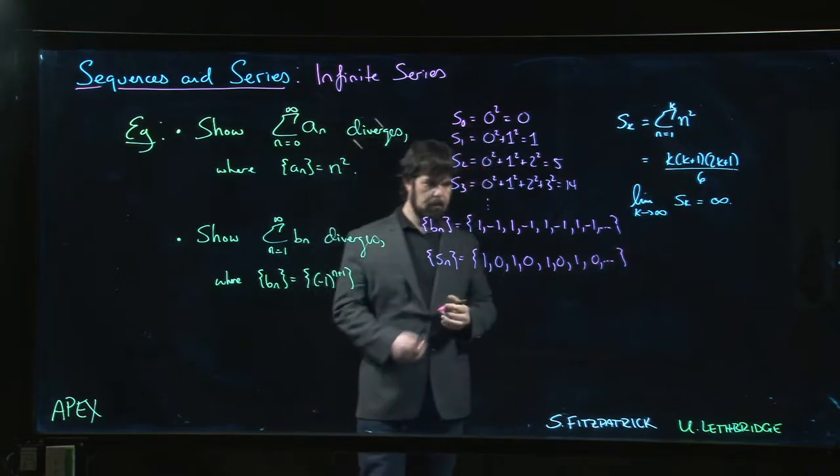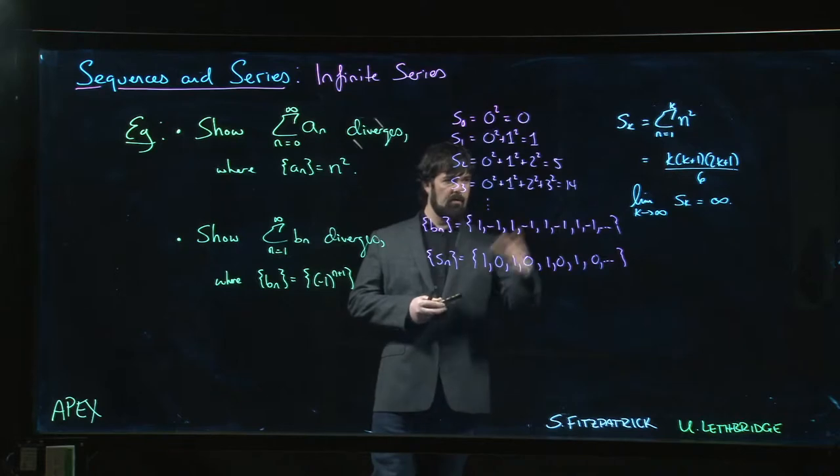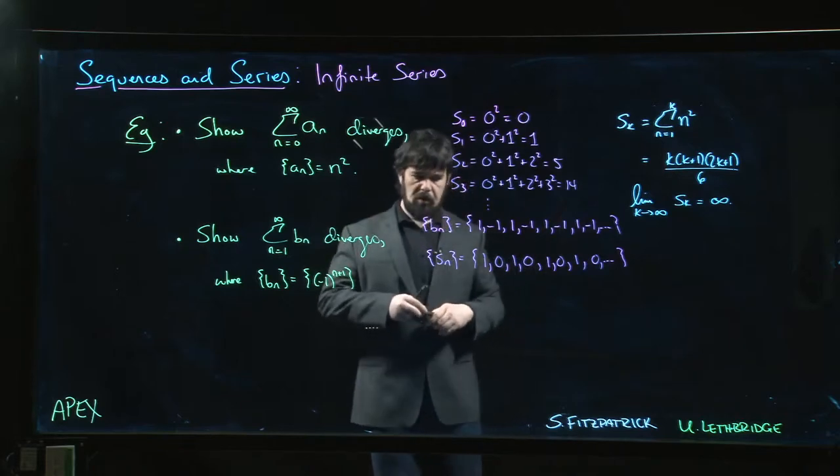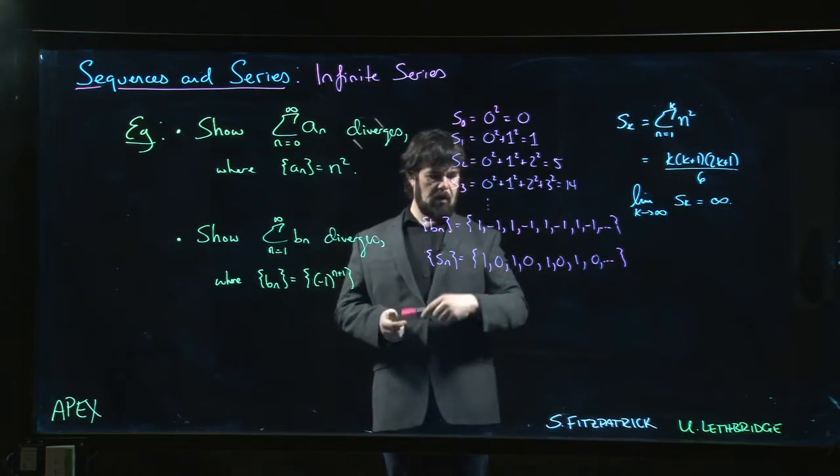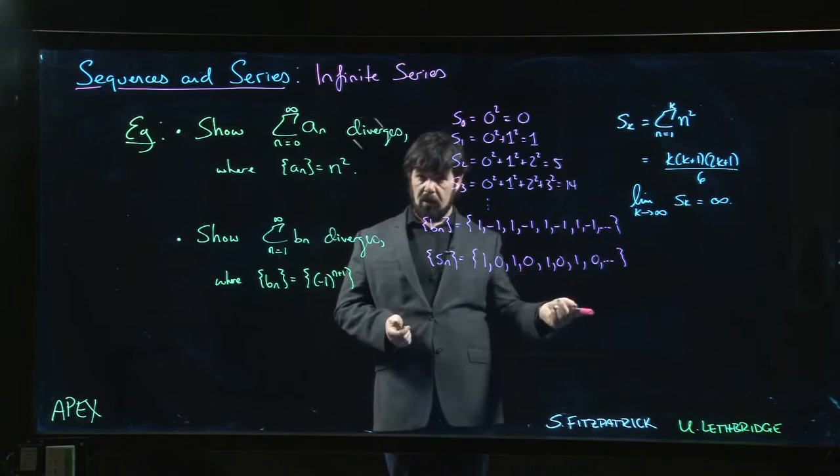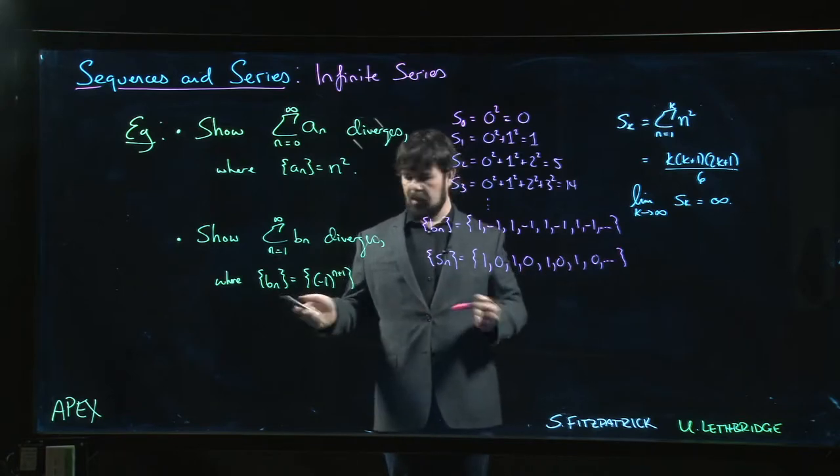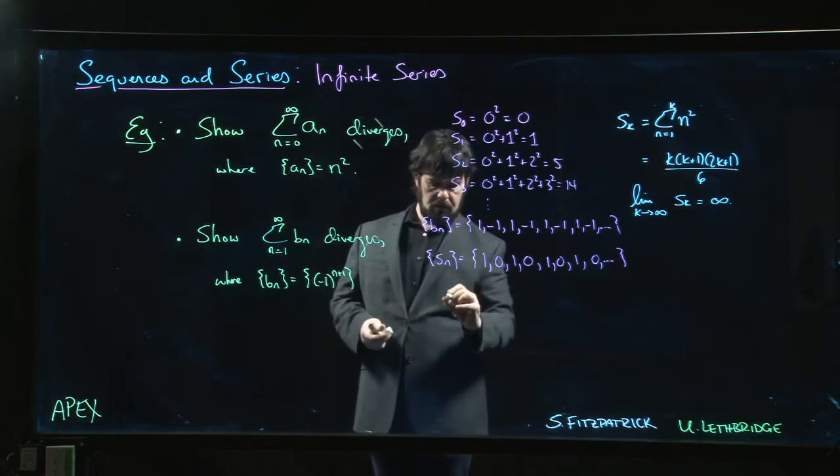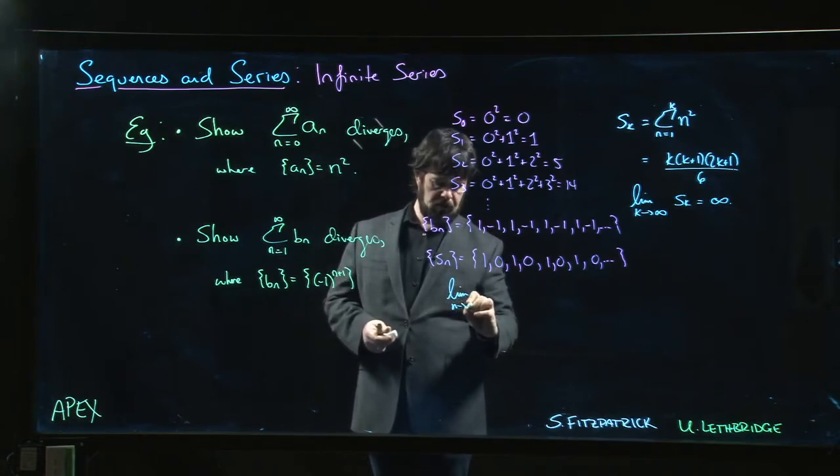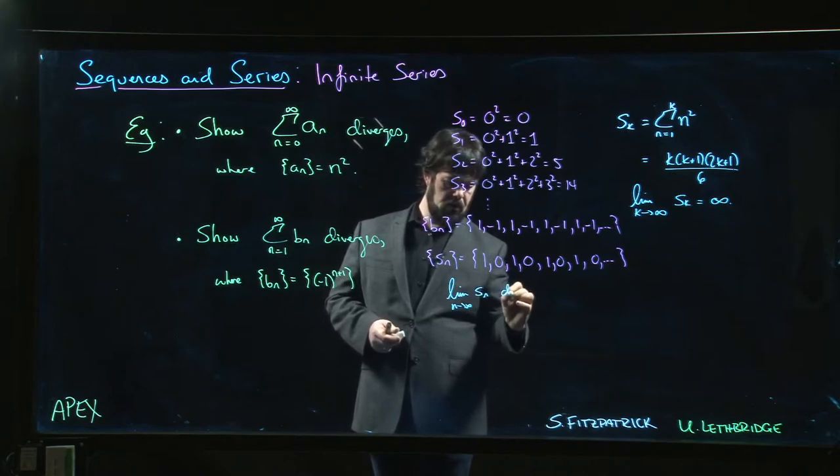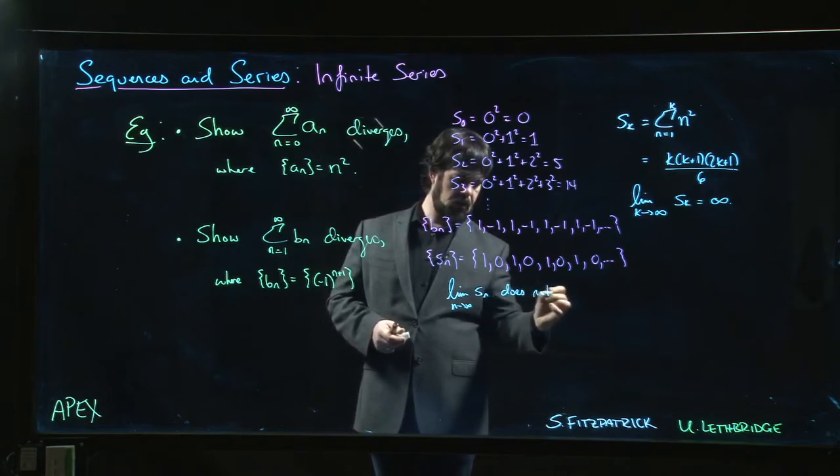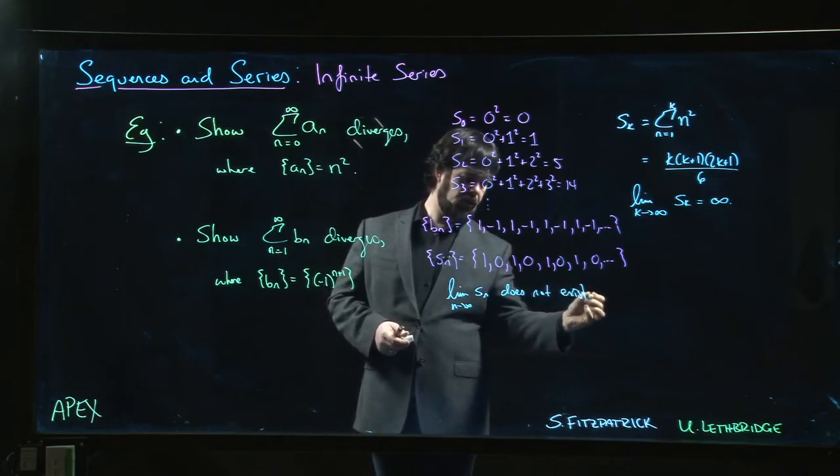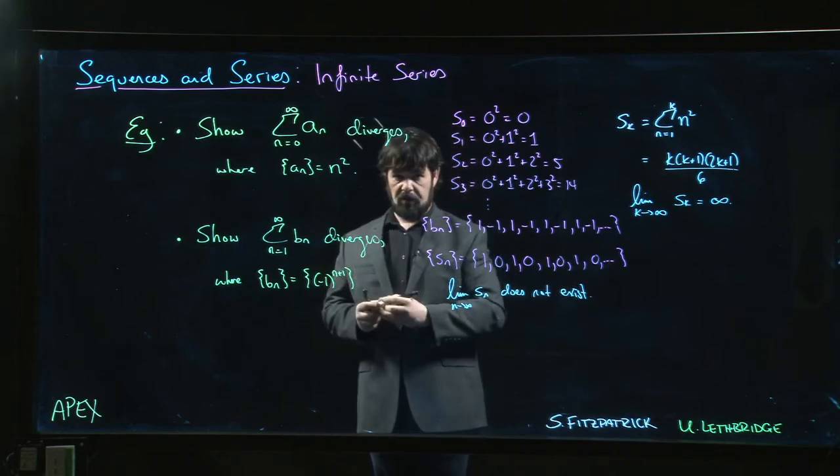So no fancy formula this time. We just look at this and say, we have a sequence which just alternates between zero and one. We want the limit of that sequence. That limit certainly does not exist—the limit as n goes to infinity of sn does not exist. So the series diverges.